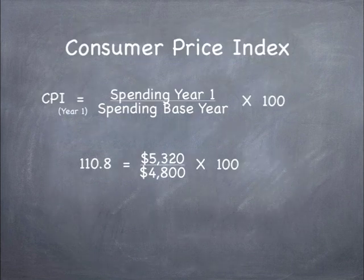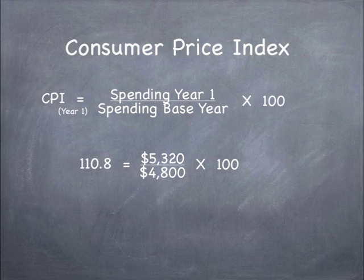The Consumer Price Index for year one equals the spending in year one divided by the spending of the base year, times 100. So our numbers would be 5,320 divided by 4,800, times 100, which gives us 110.8.